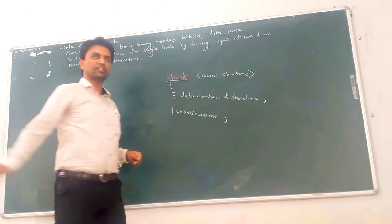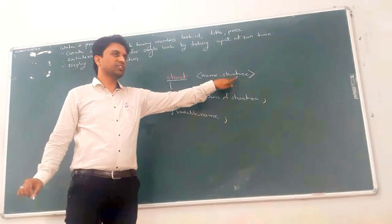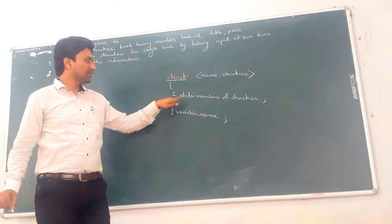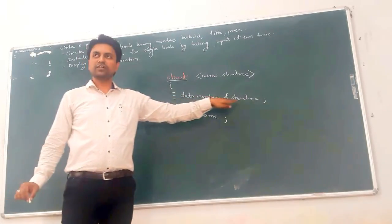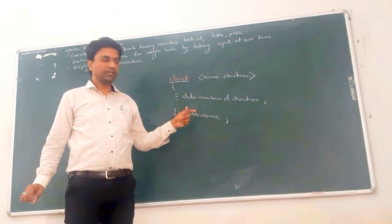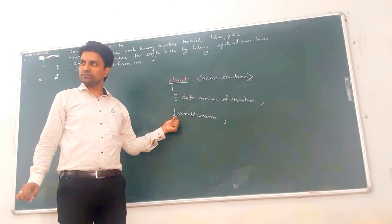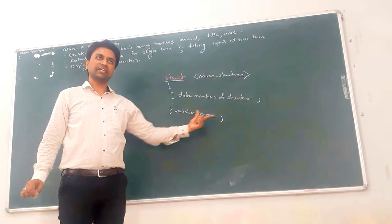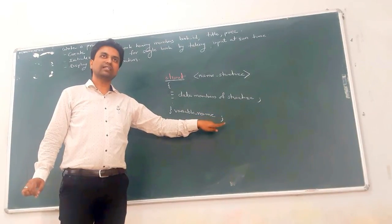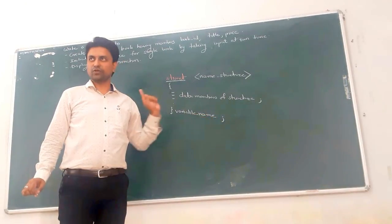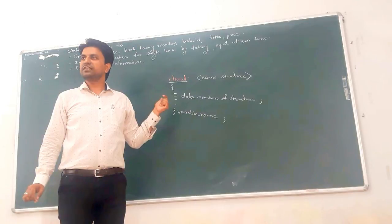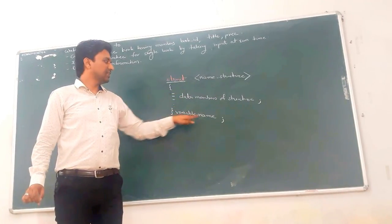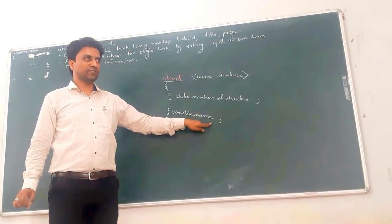So what is structure declaration? Write the keyword 'struct', then give the name of the structure. In the curly bracket, list all the data members you want. After the closing curly bracket, write the structure variable names separated by commas, and at the end write a semicolon. This is the general syntax for creating a structure, covering structure data members and structure variables.